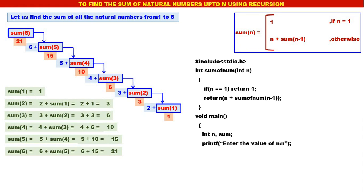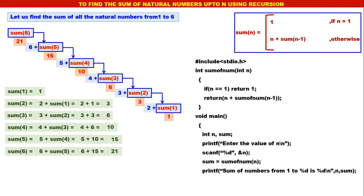Next, the main program: enter the value of n, read the value of n. Then sum is equal to sumOfNum(n). Print: the sum of numbers from 1 to n is sum. That's all — simple. So, to find the sum of all the natural numbers up to n using recursion is quite simple and quite straightforward.